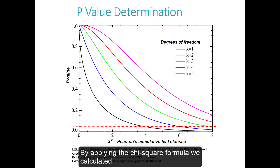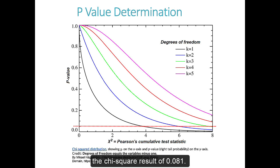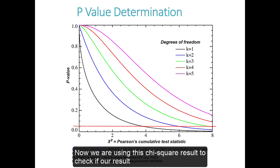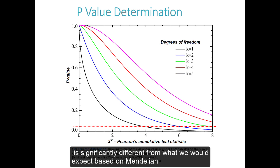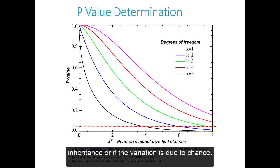By applying the chi-square formula, we calculated the chi-square result of 0.081. Now we are using this chi-square result to check if our result is significantly different from what we would expect based on Mendelian inheritance or if the variation is due to chance.